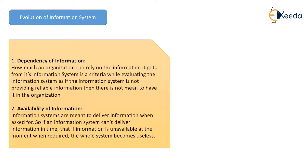2. Availability of Information: Information systems are meant to deliver the information when asked for. So if an information system cannot deliver the information on time — if the information is unavailable at the moment when it is required — the whole system becomes useless.